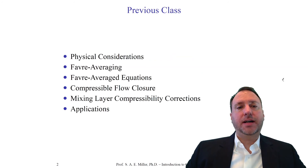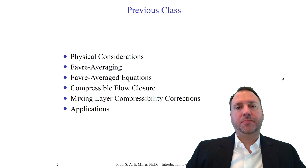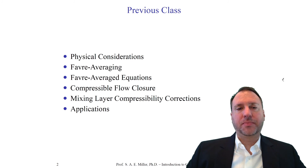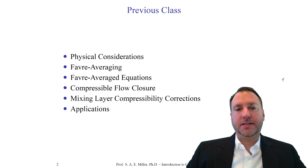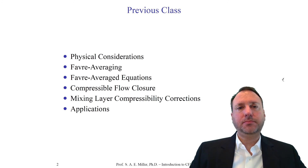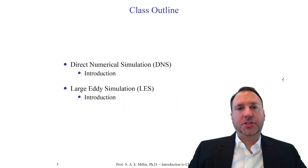In our previous class, we looked at physical considerations for compressible flows. For compressible flows, the closure can be simplified using mass-averaged weighting, which is the Favre averaging technique. We then looked at particular flow closures at an overview level and how they improve predictions with higher-speed flows, and discussed a number of applications. That closes our basic RANS discussions.